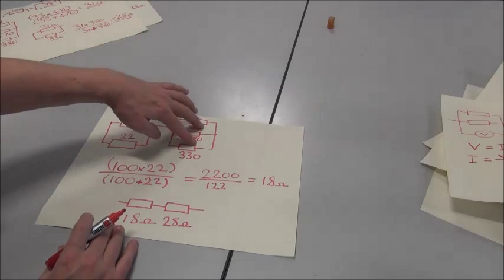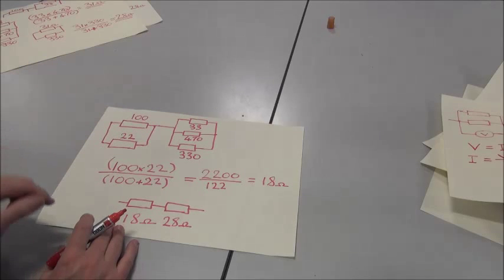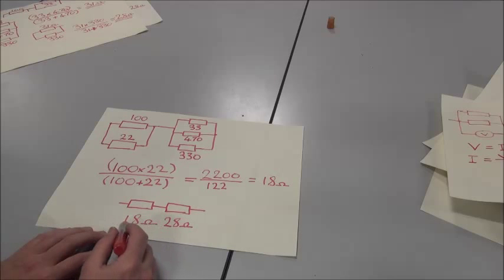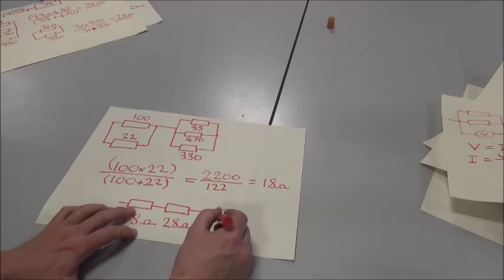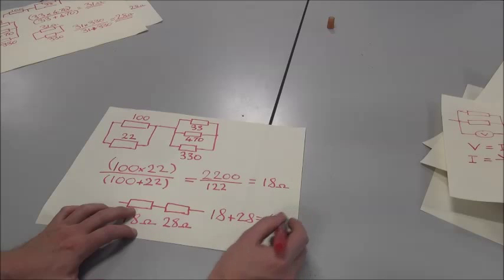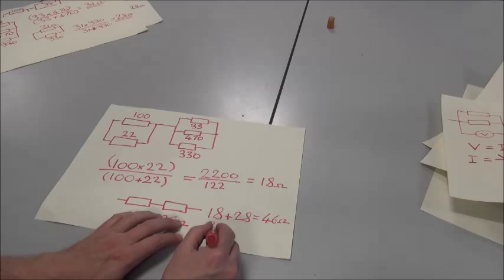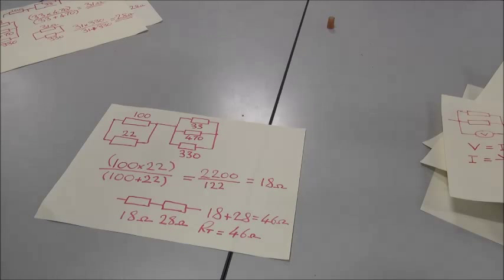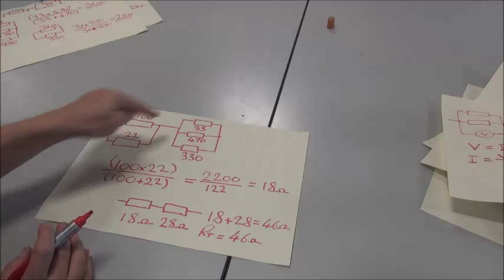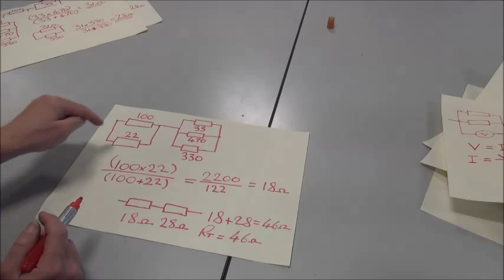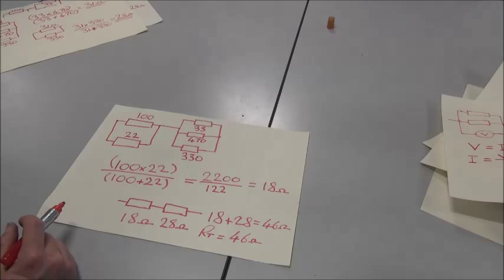Effectively, we have two parallel banks in series. We have 18 ohms and 28 ohms. Resistors in series are very easy to calculate. You simply add the values together. So we get 18 plus 28 is equal to 46 ohms. The total resistance, RT, is equal to 46 ohms. Whenever we get resistances in parallel, the resistance of that parallel bank must always be lower than the value of the lowest resistor. If it's not, you need to check your work.